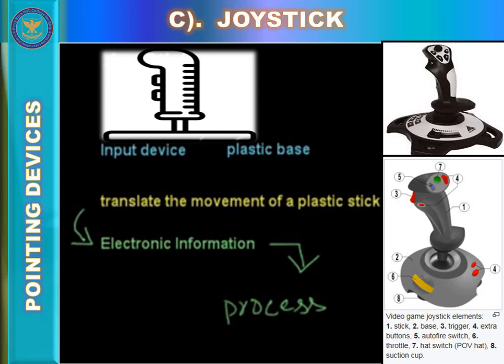Joysticks are also used for controlling machines such as cranes, tractors, trucks, underwater vehicles, wheelchairs, and surveillance cameras. A joystick is an input device that controls a character or machine in a computer program, such as a plane in a flight simulator game. The first joystick was invented at the U.S. Naval Research Laboratory by C.B. Mirick in 1926, and it was a two-axis electronic joystick. Most computer joysticks connect to a computer through a USB port.